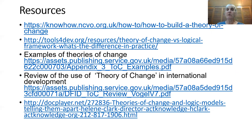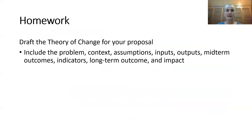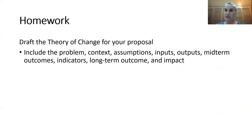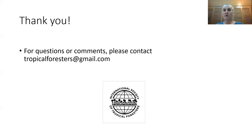This PowerPoint will be available, along with links I've found for how to develop a theory of change. There's nothing special about these resources — they looked useful to me, and you may find others that are better. For your homework, draft the theory of change for your proposal. Include the problem, context, assumptions, inputs, outputs, midterm outcomes, indicators, long-term outcome, and impact. The part with indicators we will go over again in more detail in a couple of weeks when we talk about evaluation for your project. Thanks for joining this video and we will see you next week.